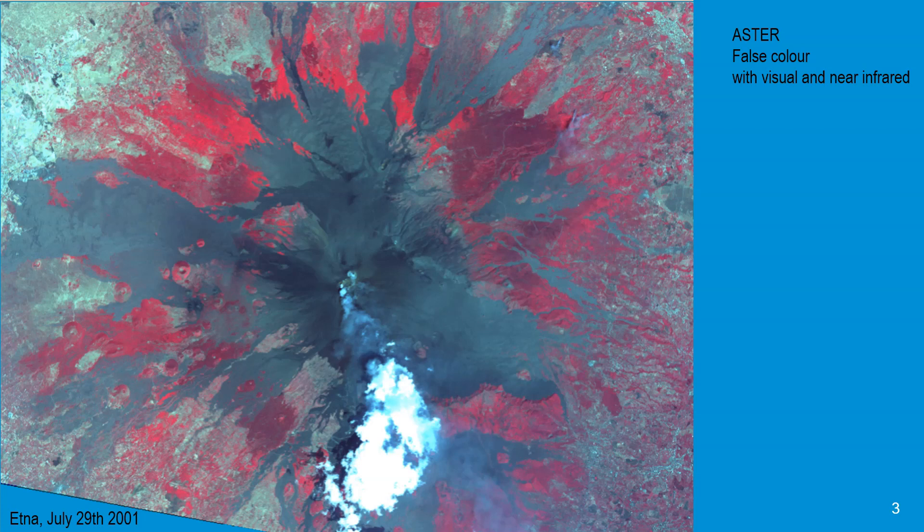We see an image with a visual and near infrared. Everything in red indicates healthy vegetation. The black parts are destroyed by the volcano eruption. But what we can't see is the direction of the lava flow.